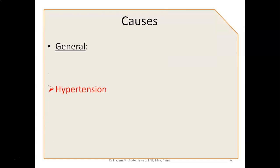Among the general causes, the most common is hypertension. Hypertension usually affects older adults and can lead to bilateral epistaxis. Bleeding disorders, which can be discovered dating since birth, are also important general causes.